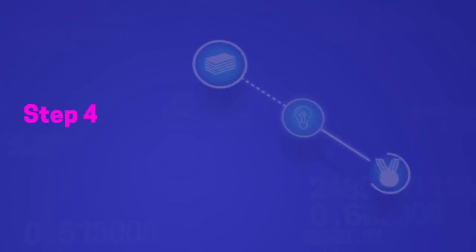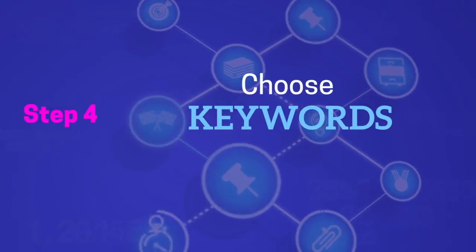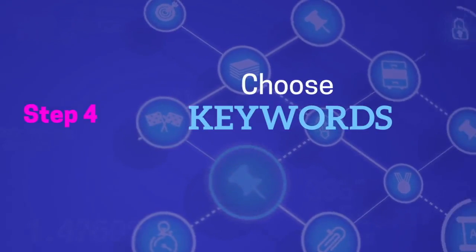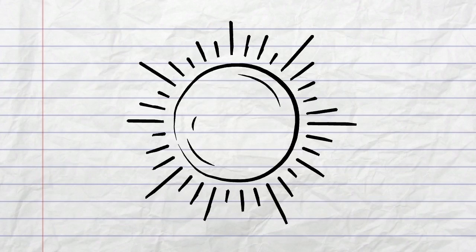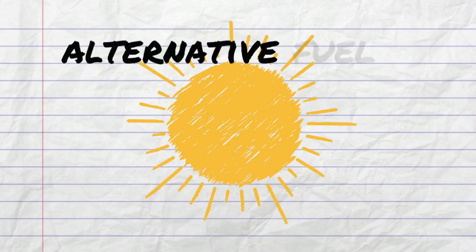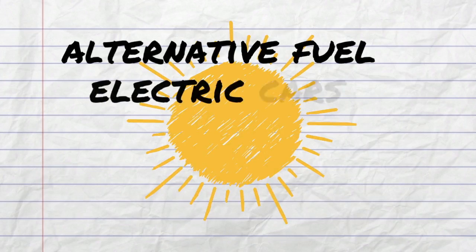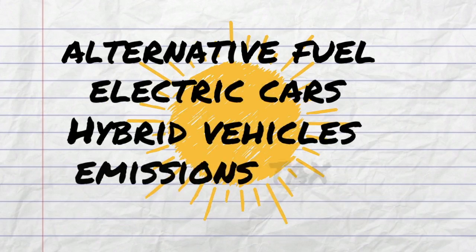Step four is to come up with some good keywords for searching for sources on your topic. Here's a tip: write down as many keywords and phrases that relate to your topic as you can think of and try them all. Searching with various keywords can help you get the most and best articles.